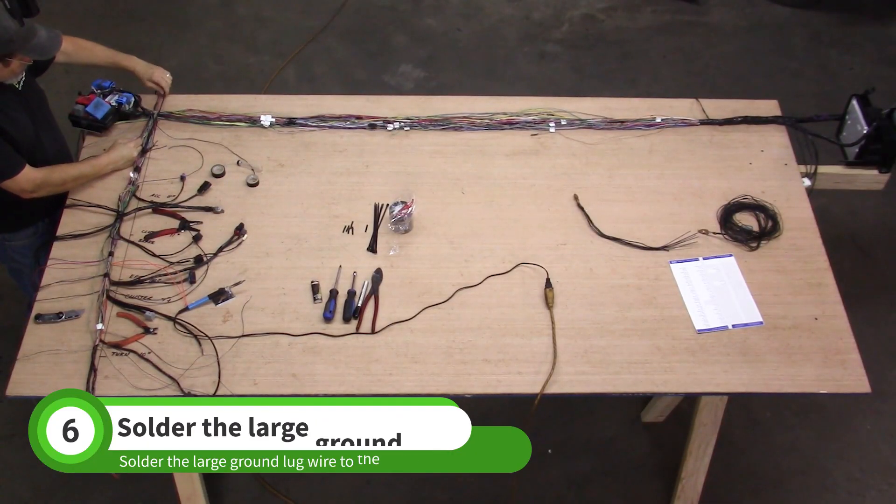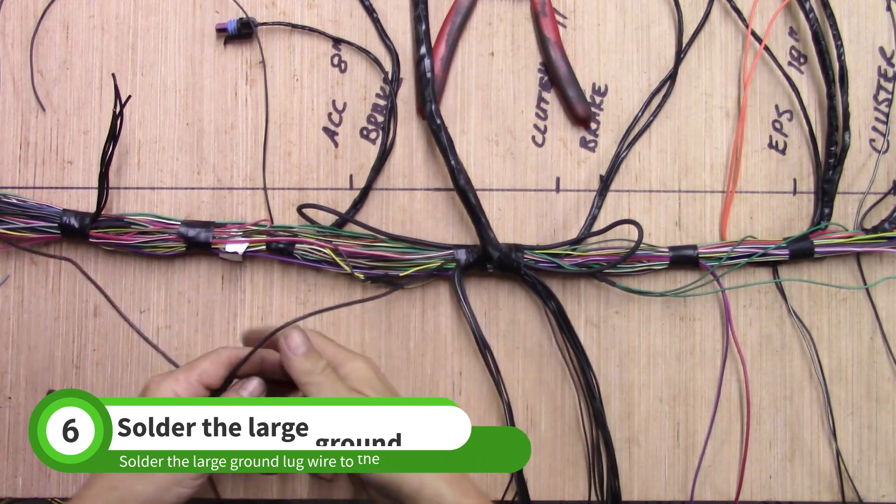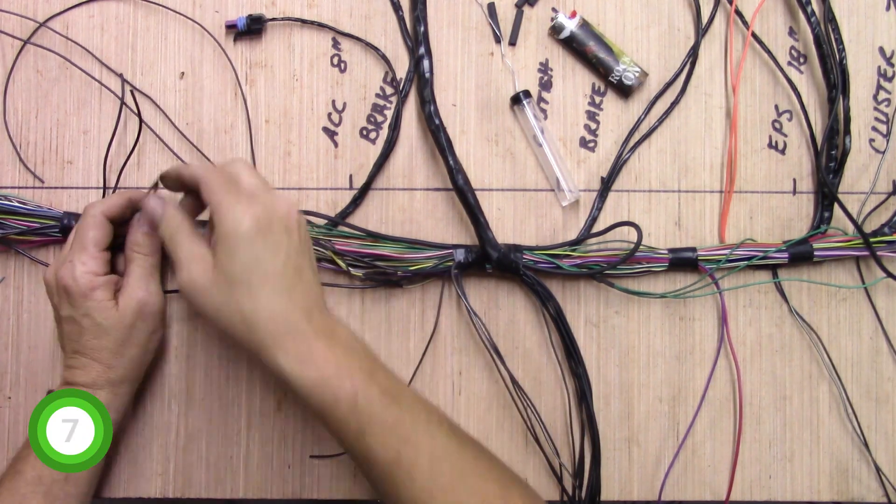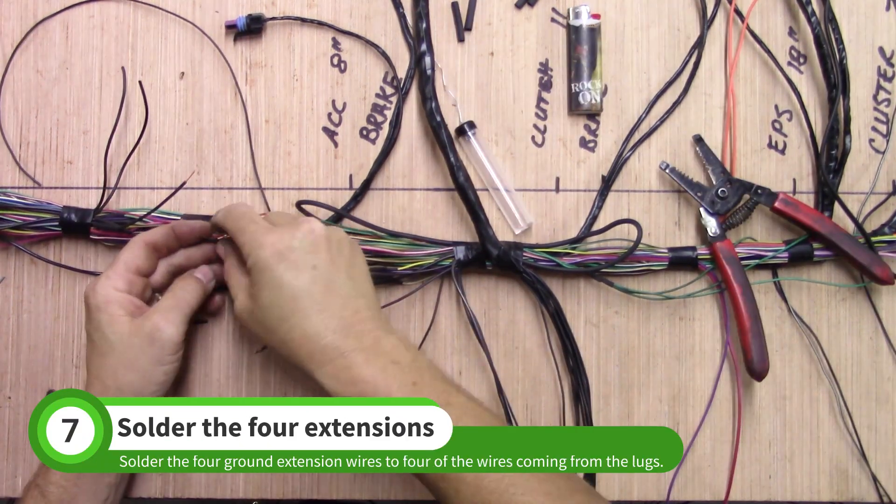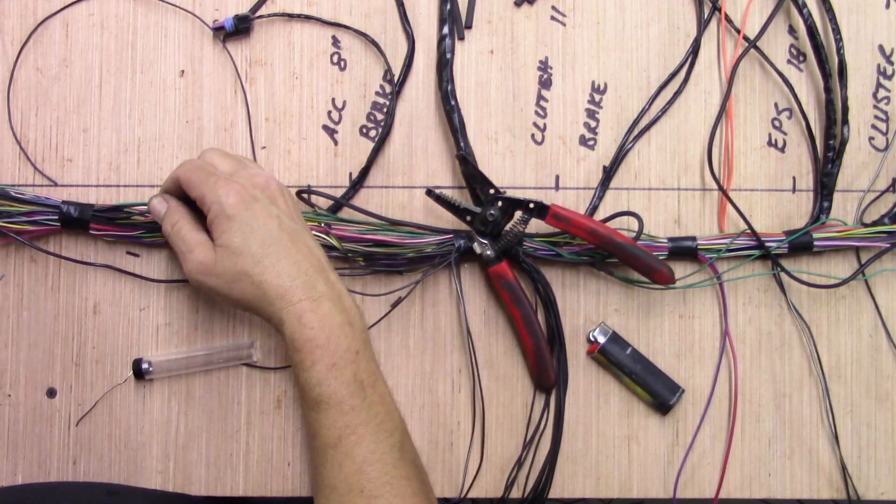Grab the large ground wire near the BCM and solder it to the large ground coming from the lugs. Solder the four ground extension wires to four of the ground wires coming from the lugs. After soldering all four, pull the slack toward the BCM.